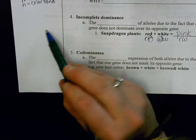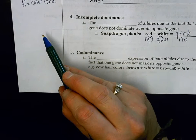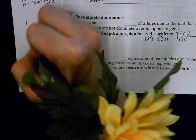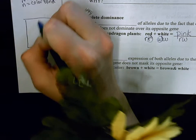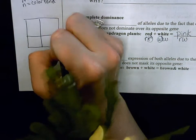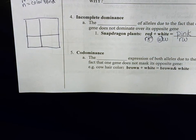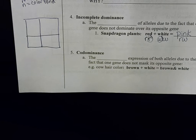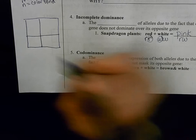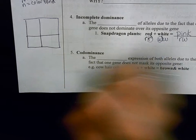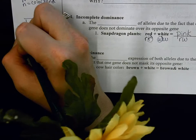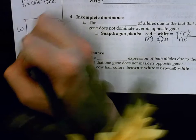So we're going to set up a Punnett square over here to practice this. I'm going to set it up to mate a pink flower with a white flower. White is a purebred, which means it's going to have little w.